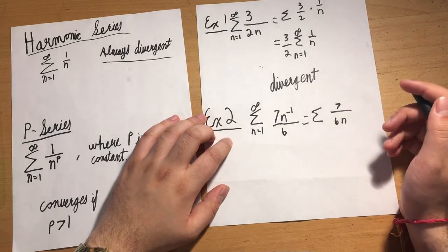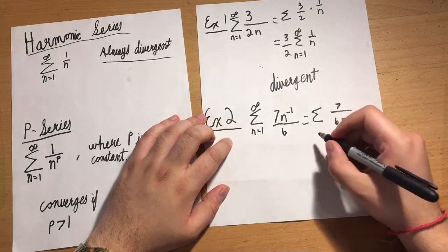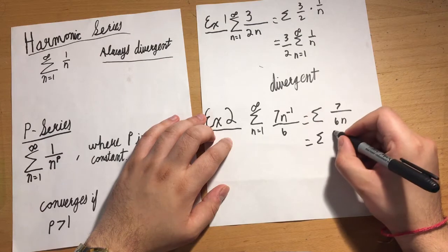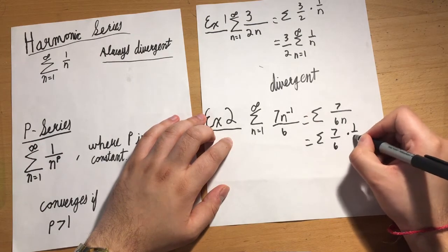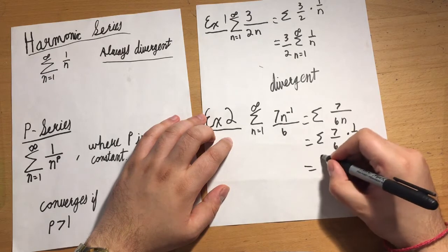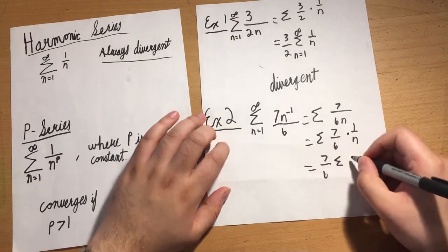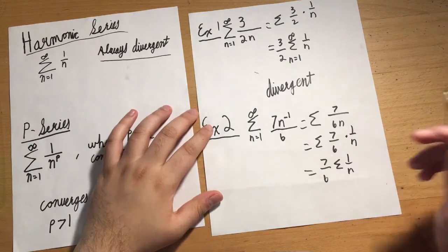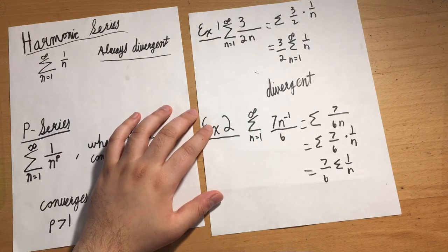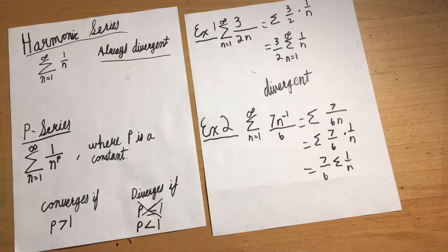I'll factor out the 7/6, and just like above, we get a harmonic series. Harmonic series are always divergent.